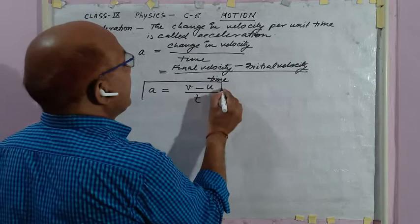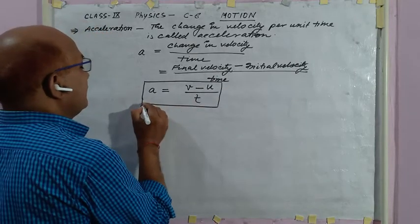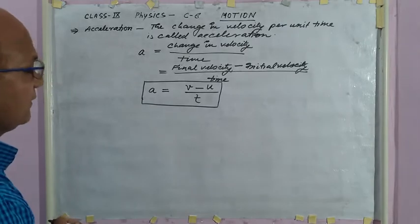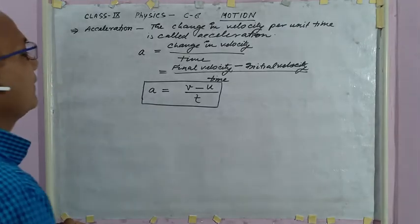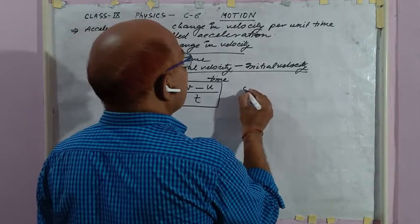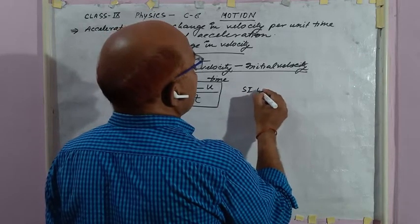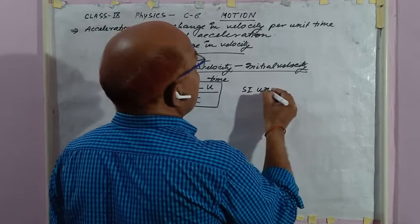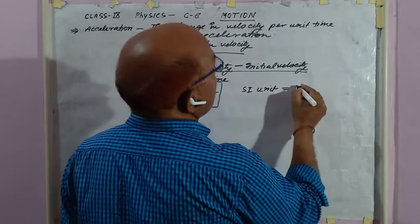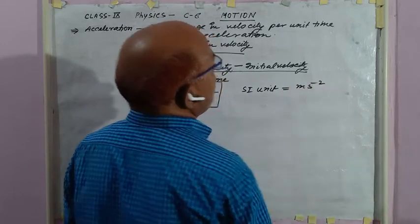By applying this formula, we can find out acceleration in a body. The SI unit of acceleration is meter per second square.